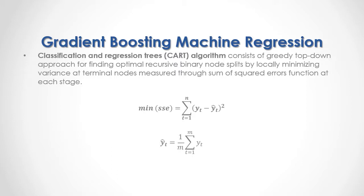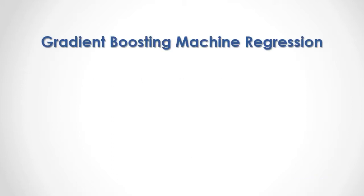Terminal node output target feature mean is equal to 1 divided by m, where m is the number of observations in the terminal node, multiplied by the sum from the first to the last of the output target feature data.